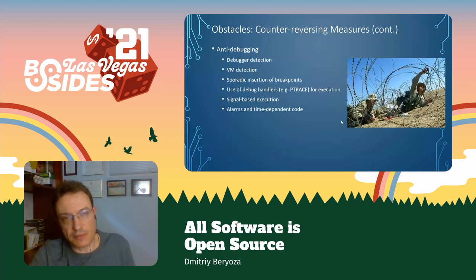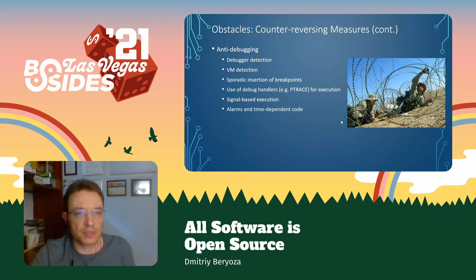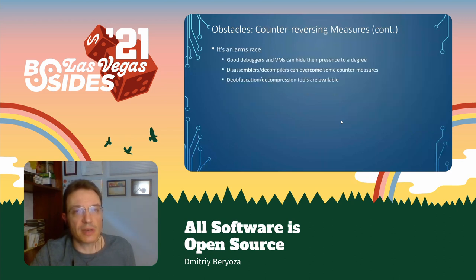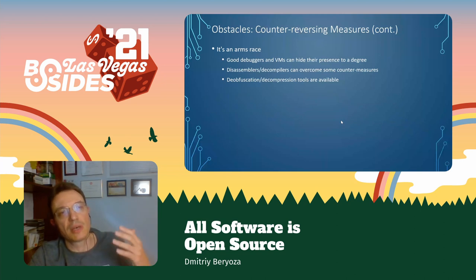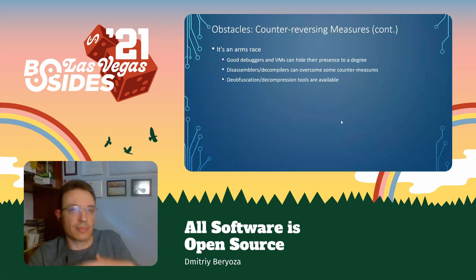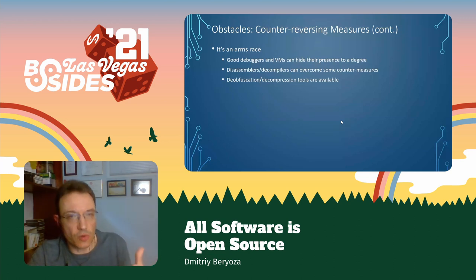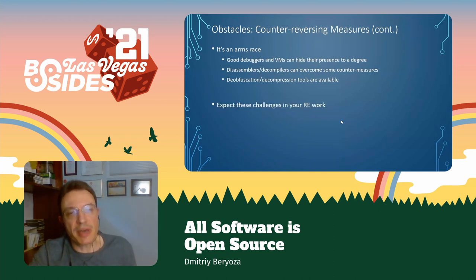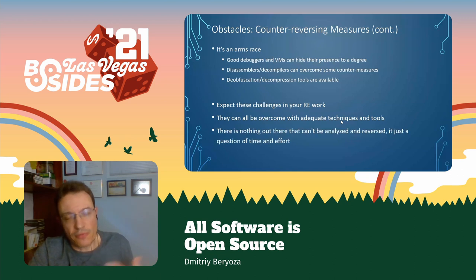As you start debugging, there are all kinds of anti-debugging tricks — from debugger detection, VM detection, and many others. This is not an exhaustive list. But it's an arms race: debuggers and VMs have measures for hiding their presence, and disassemblers and compilers get smarter over time and can overcome some of these tricks. My firm belief is there's nothing out there that cannot be analyzed and reversed — it's just a question of how much time and effort you're willing to invest.